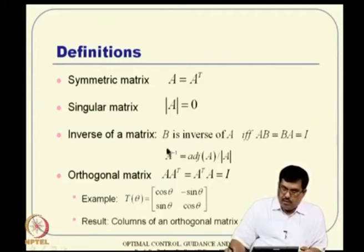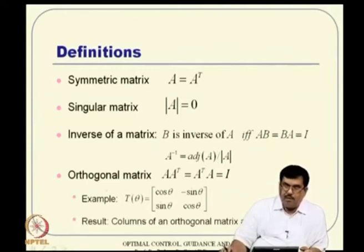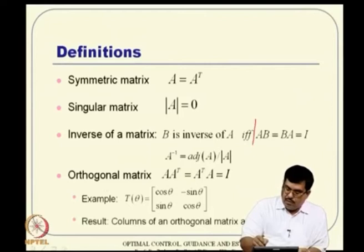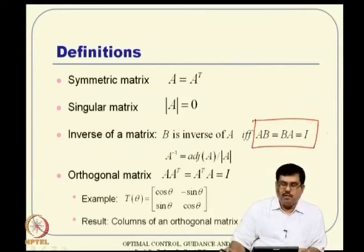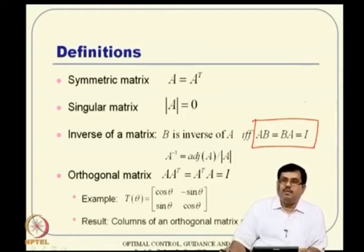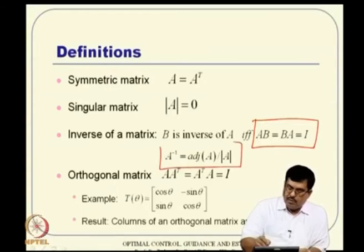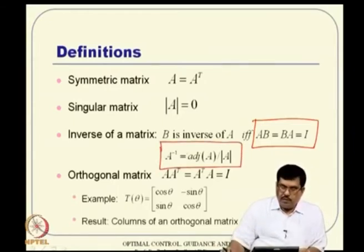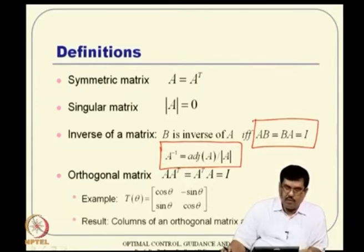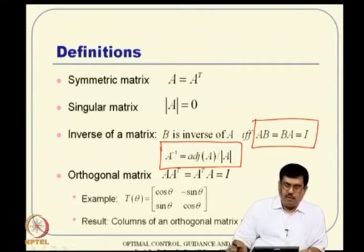I emphasize: do not confuse the definition with a standard result. The definition is AB equal to BA equal to identity, and the standard result is A-inverse equals adjoint of A divided by determinant of A. The definition is very useful for theorems and proofs. The standard result is useful when you actually want to compute A-inverse, though it is not computationally efficient. Both are if and only if conditions — people sometimes confuse the standard result as the definition.